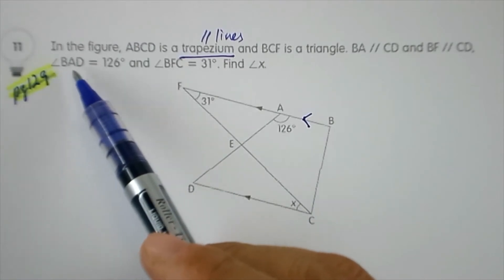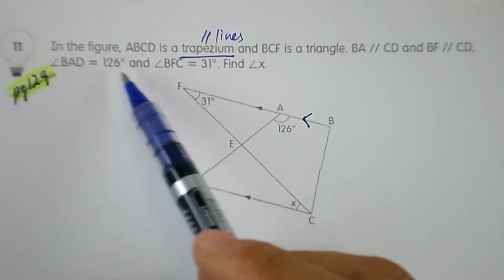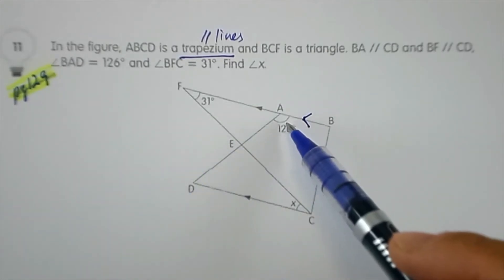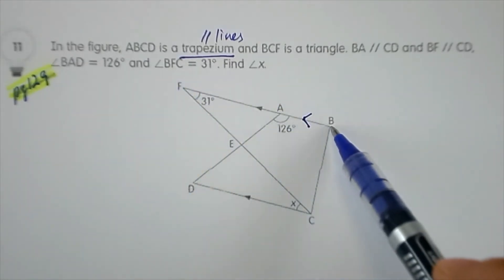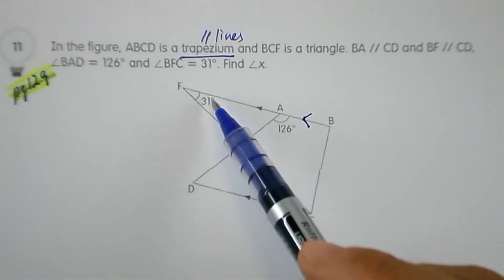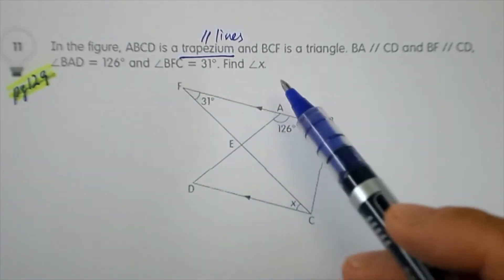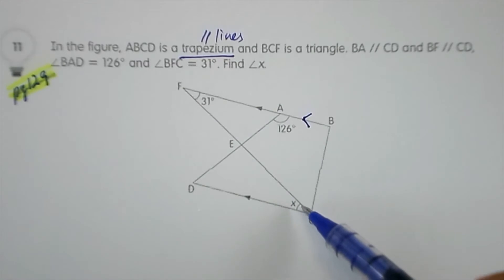Angle BAD is 126 degrees. BAD is given in the diagram, and angle BFC is also given as 31 degrees. Find angle X. Angle X is over here.